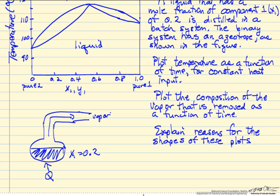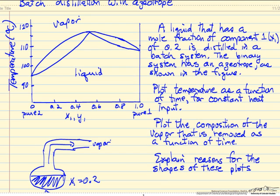We want to know, one of the questions is, what's the composition of this vapor as a function of time. So if we look at the diagram and we start with a liquid, for example here, it's our starting point. The mole fraction is 0.2, and if we supply heat, first of course we heat the liquid up until it gets to this point.